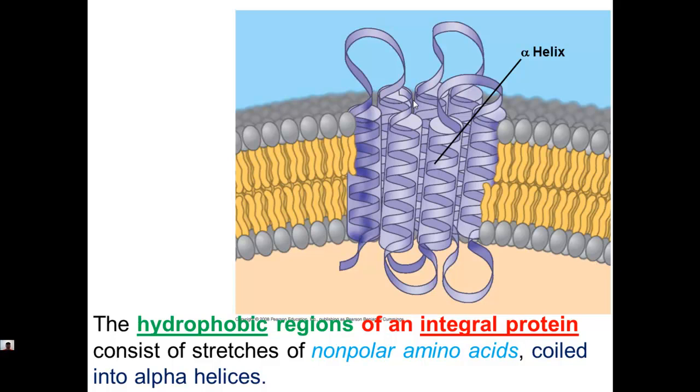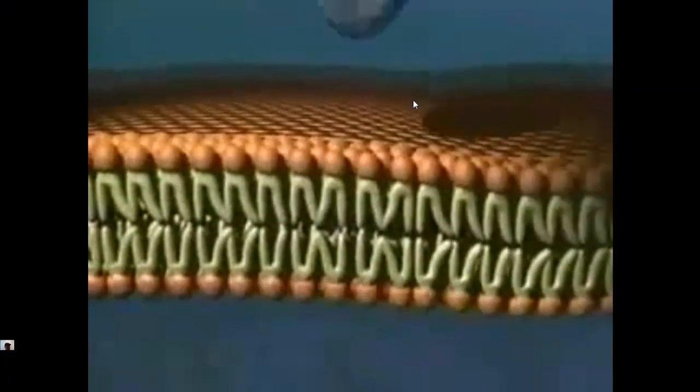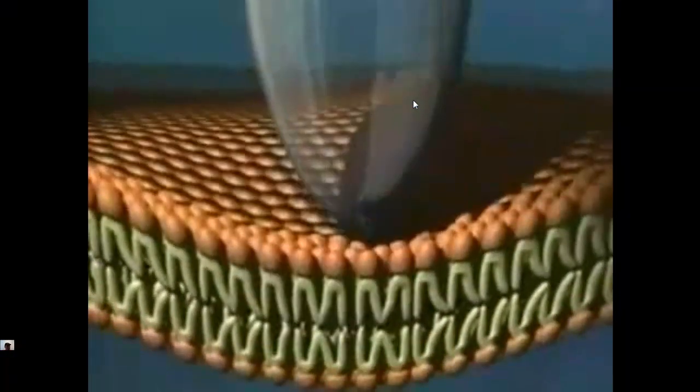Here it's just talking about the hydrophobic regions of this protein that's embedded in the membrane. Between the living machinery of the inner cell and the harsh conditions of the outside world stands the cell's plasma membrane. As crucial as this barrier is, it's surprisingly flexible.